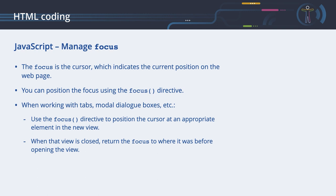JavaScript: Manage focus. For users with visual impairments, the focus is the cursor, which indicates the current position on the web page. You can actively position the focus by using the focus() directive to create an efficient workflow. When working with tabs, modal dialog boxes and other advanced user interface elements, use the focus() directive to position the cursor at an appropriate element in the new view. When that view is closed, return the focus to where it was before opening the view.